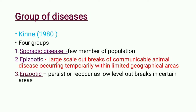A scientist named Snieszko compiled the groups of diseases, which is important for exams like the GRF. There are three groups: first is sporadic disease, which occurs in only a few members of a population. Second is episodic disease, which can be a large-scale outbreak of communicable animal disease occurring temporarily within a limited geographical area. Third is enzootic disease, which persists or re-occurs as low-level outbreaks in certain areas.